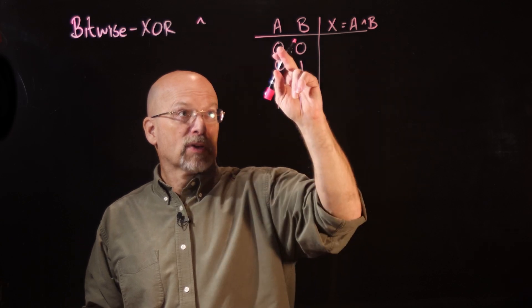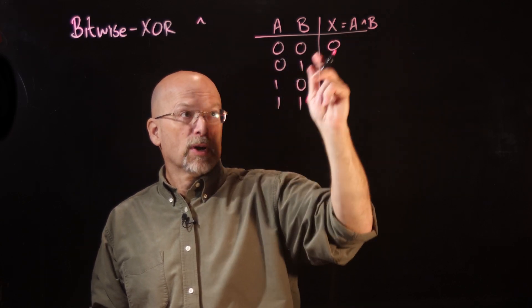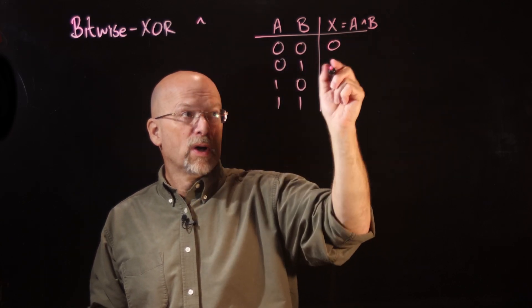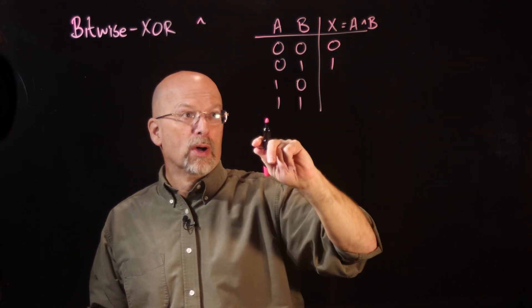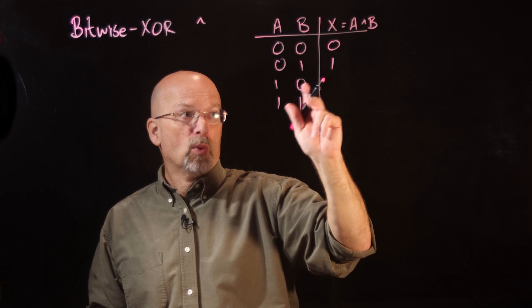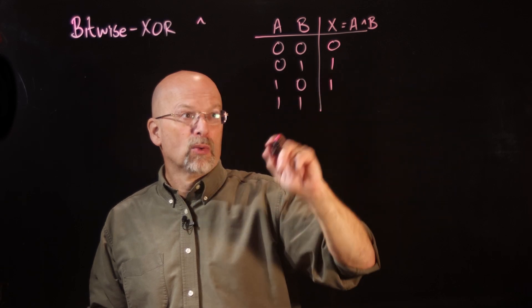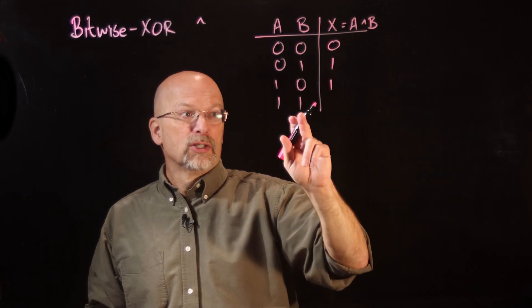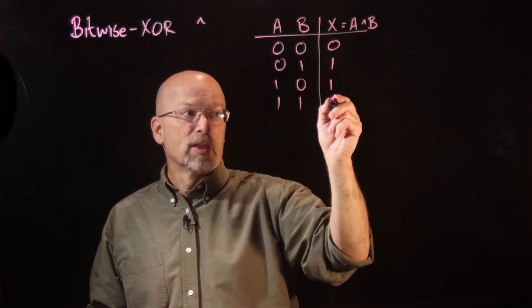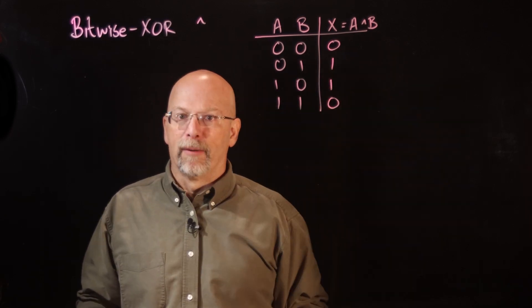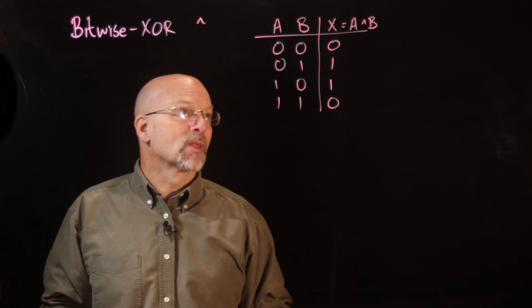We've got zero 1's — that's a 0. One 1 — that's a 1. One 1 — that's a 1. Two 1's — that's a 0.